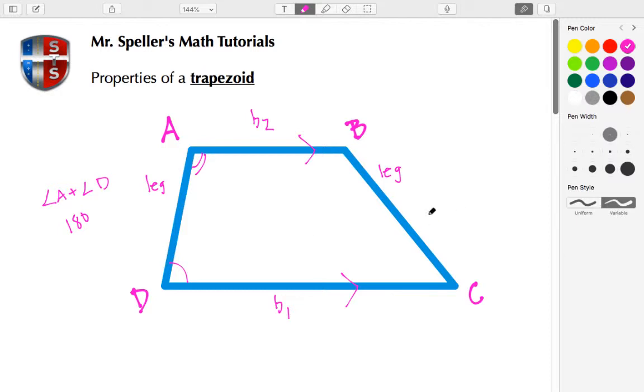We have a similar situation here on the right-hand side. For angle B, let's put three of those marks, and angle C, let's put four. So angle B plus angle C is also supplementary, which means it also adds to 180 degrees.